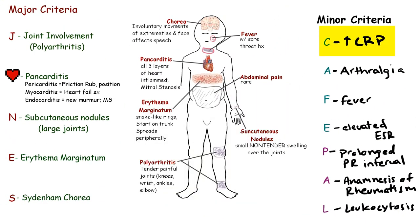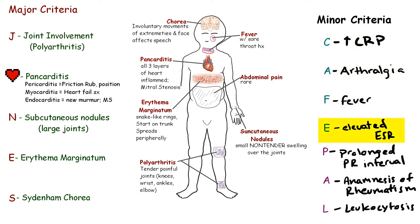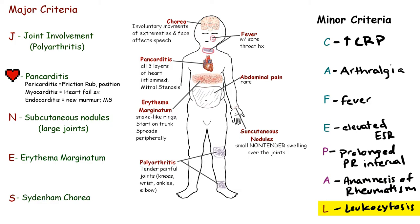The minor criteria are increased CRP, arthralgias, fever, elevated ESR, prolonged PR interval, history of rheumatism, and leukocytosis.